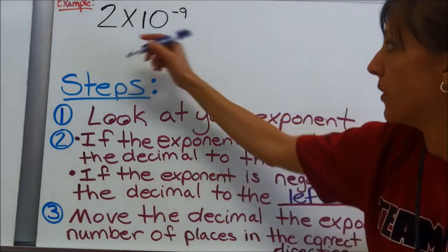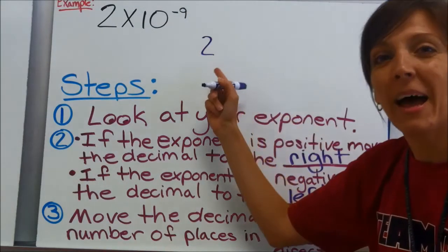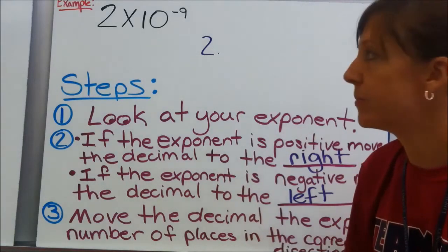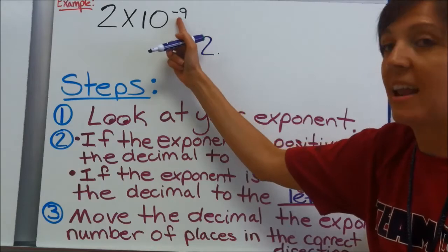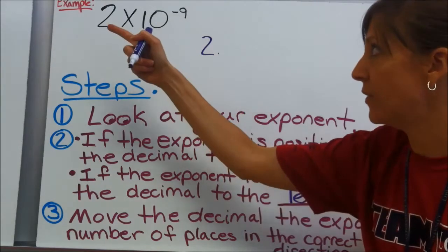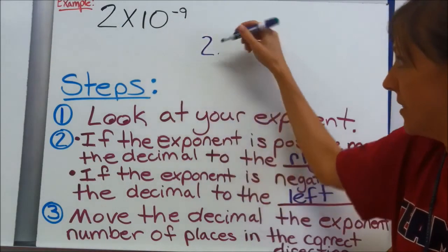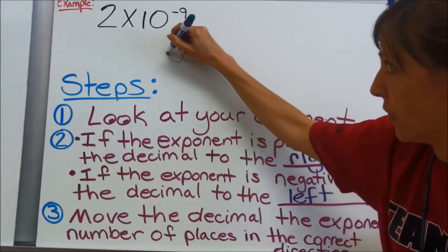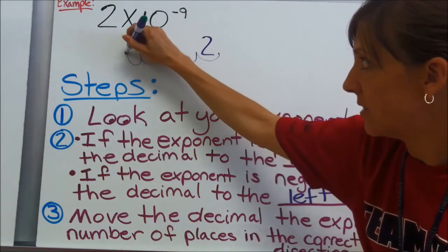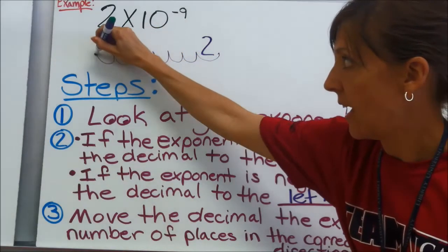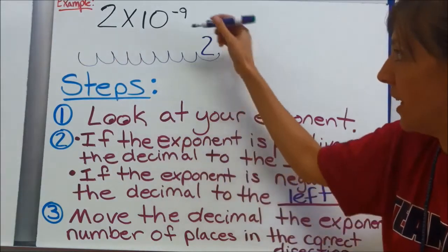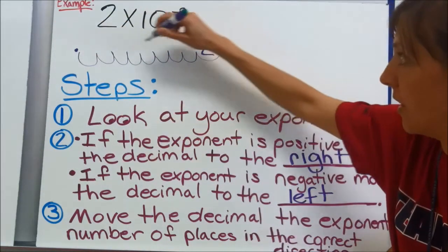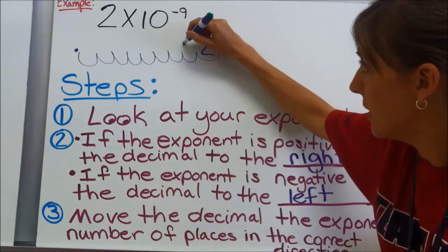So here we go. I'm going to rewrite my number, which is 2. Remember, behind a whole number there's always a decimal. So I'm going to move in a negative direction, which would be to the left, and I'm going to move 9 places: 1, 2, 3, 4, 5, 6, 7, 8, 9. I'm going to put my decimal here first, and then fill in all of these blank place value spots with a 0.